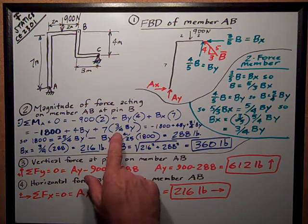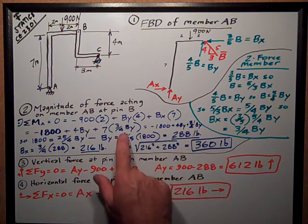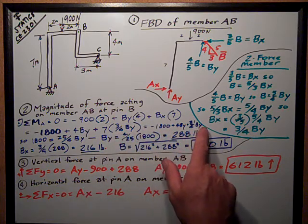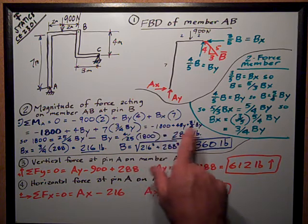So I get this form, which is equal to negative 1800 plus 4BY plus 21/4 BY. Now I've got just one equation, one unknown.